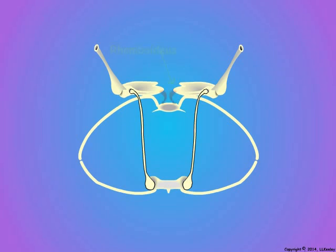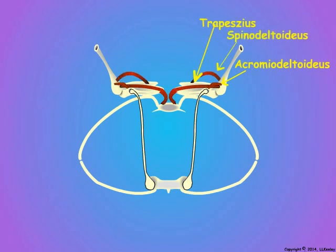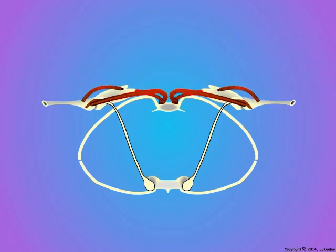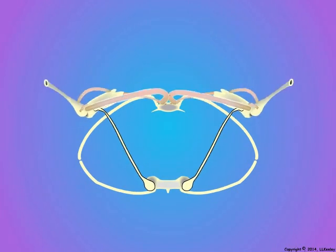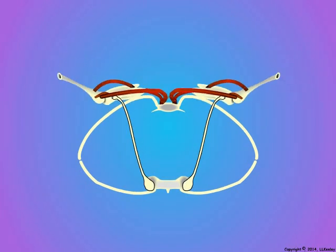During the upstroke, the rhomboideus muscle pulls the scapula back dorsally, and the acromio deltoideus, trapezius, and spinodeltoideus muscles elevate the humerus. Let us watch several repetitions of only the muscles involved in the upstroke.